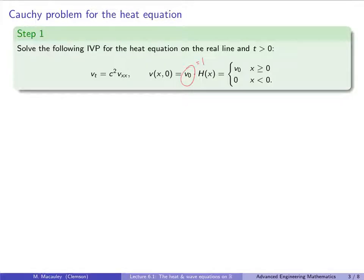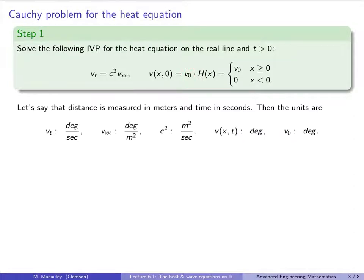It's not clear how to approach this, so let's motivate it by looking at the units of all these quantities: Vt, c², Vxx, V, and so forth — and make a dimensional analysis argument. Let's say distance is in meters, time in seconds, and temperature in degrees. Then Vt has units degrees per second, and Vxx has units degrees per meter squared. Since c²·Vxx = Vt, that forces c² to have units m²/s. V has units degrees, and so V₀ also has units degrees. X has units meters and T has units seconds.